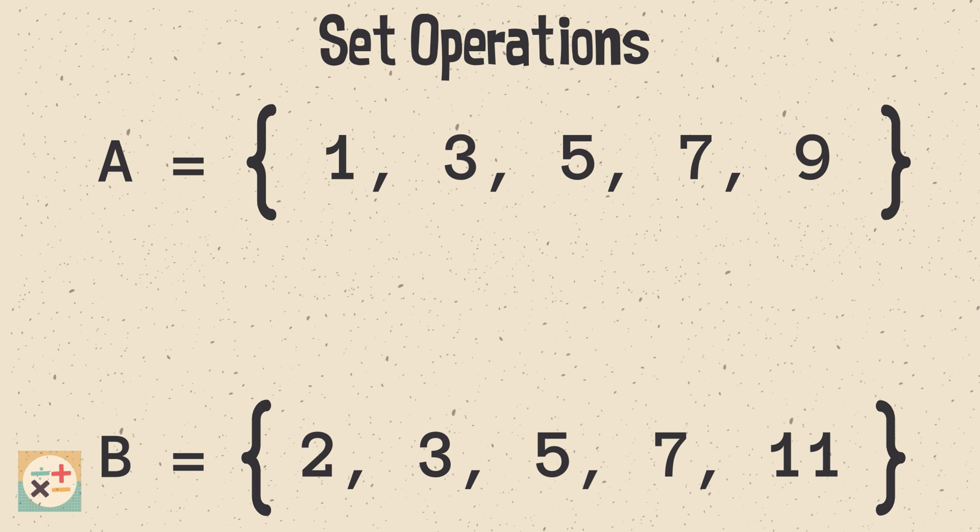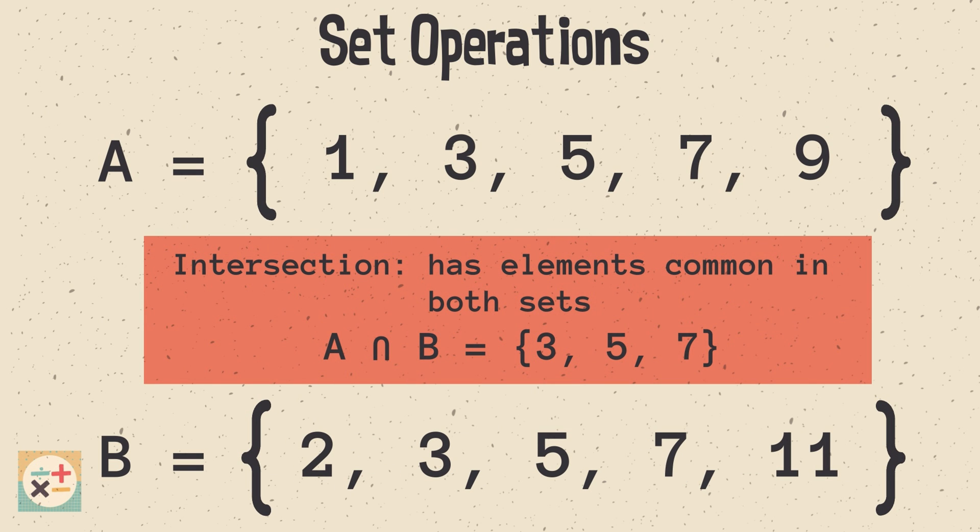Next up we have the intersection operation. Given sets A and B, the intersection, denoted with an upside-down version of the union symbol, contains only the elements that exist in both sets.